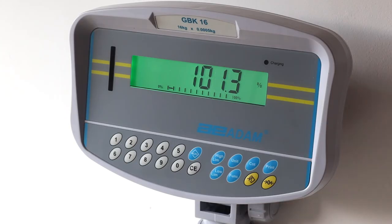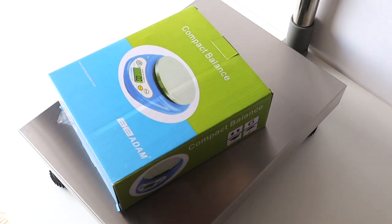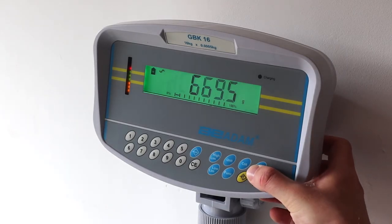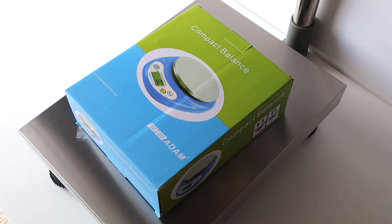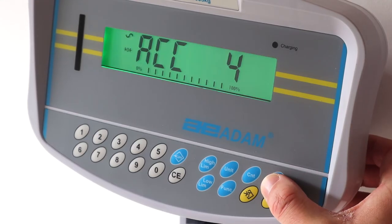If you need to add up multiple weights, simply press the print button each time an item is added to the scale. When you're finished, with nothing on the scale, press the print button to see the accumulated total.